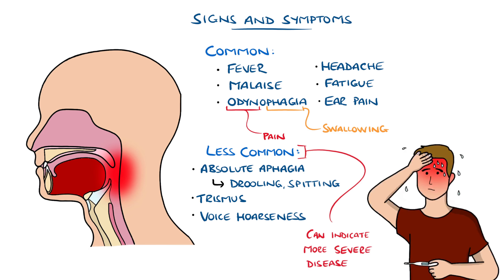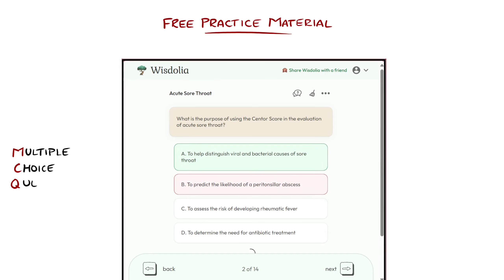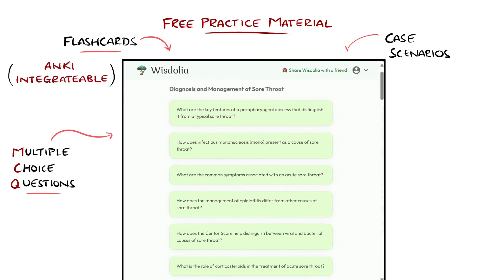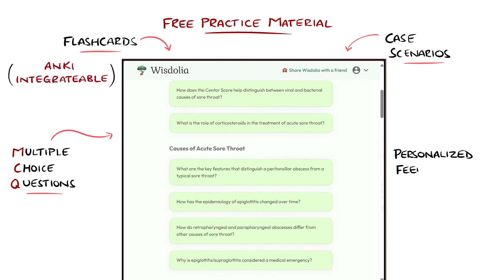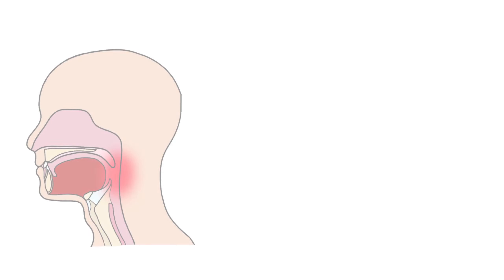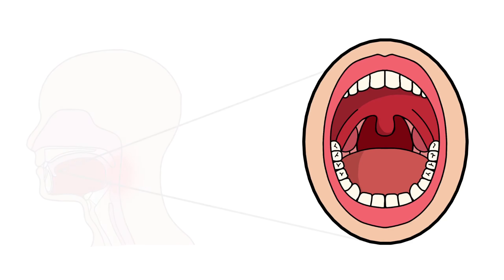These can be an indication of other severe diseases that we'll touch on when looking at the causes. Most cases of an acute sore throat are due to infection, with tonsillopharyngitis or acute pharyngitis being the most common.